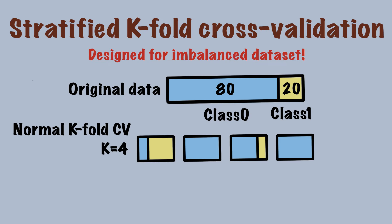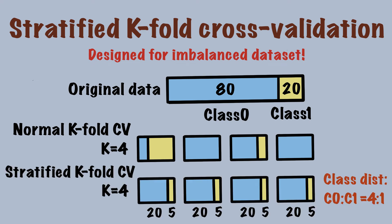So if the first fold is used as the testing set, the training set will contain only a few samples from class 1. Obviously the model won't be able to train properly. Therefore, we'd like to have the same class distribution among the folds, and this is what stratified k-fold CV tries to achieve.